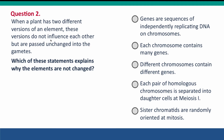Here's another question. Mendel found that when a plant has two different versions — two different alleles — of one of his elements, those versions don't influence each other; instead, they're passed unchanged into the gametes. The fact that allele A1 was sharing the cell with allele A2 didn't change it in any way. Which statement underlies that observation? The most important answer is that genes are sequences of independently replicating DNA on chromosomes — the replication of the DNA of one version doesn't affect the replication of the other version.